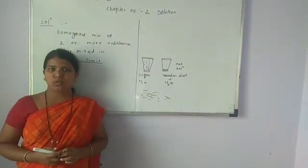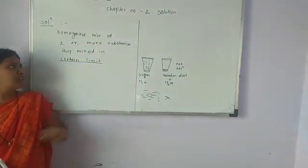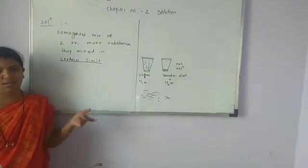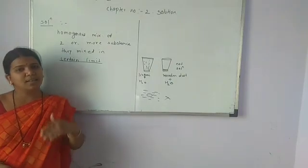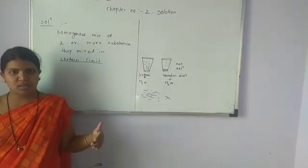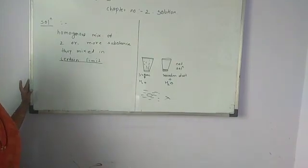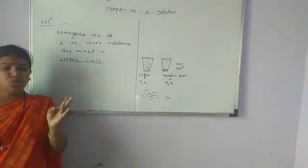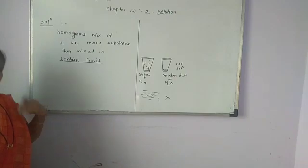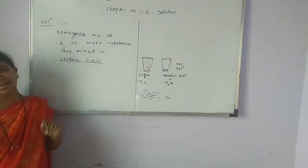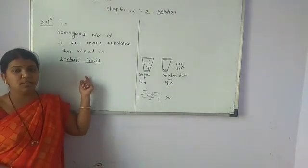So, what is meant by solution? A solution is a homogeneous mixture of two or more substances. They are mixed in a certain limit — that is called a solution. It occurs in three phases: solid, liquid, and gaseous. For example, water, sugar, salt, and lemon juice together form a solution. Two or more substances mixed in a certain limit — that certain limit is the most important part of this definition.